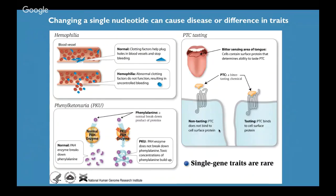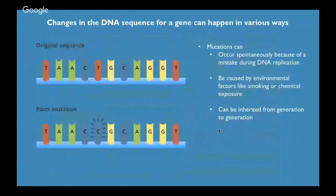That's getting at how just changing a single nucleotide in a single gene can cause diseases or different traits. These single gene traits are quite rare, but there's certainly Huntington's disease and cystic fibrosis as examples of diseases caused by mutations in a single gene.